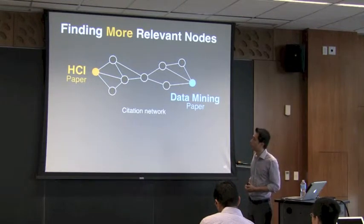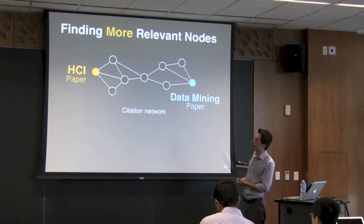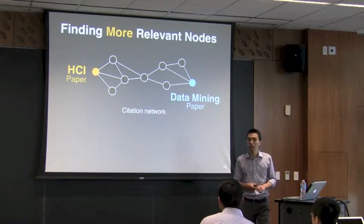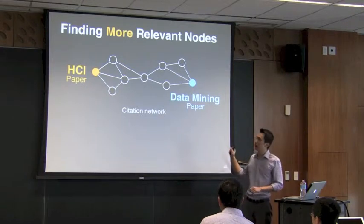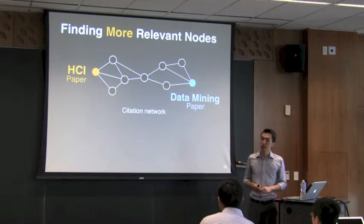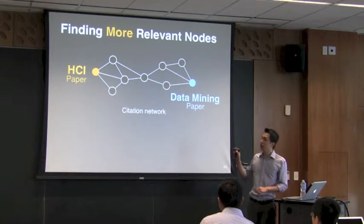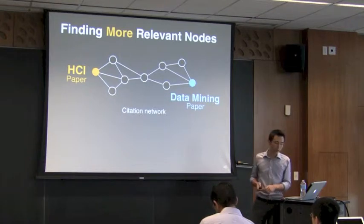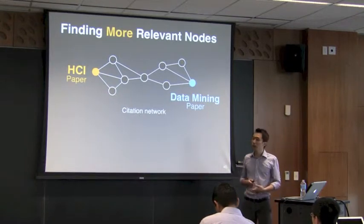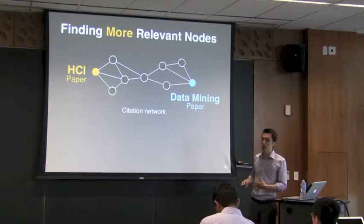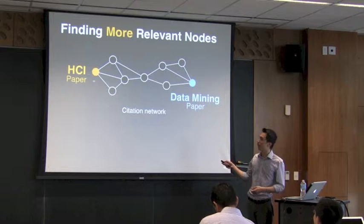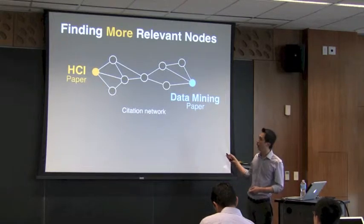Here I'm showing you a citation network. A node represents a paper, and an edge would mean one paper citing the other. Suppose my current interest or my current starting point has one CHI paper and a data mining paper.